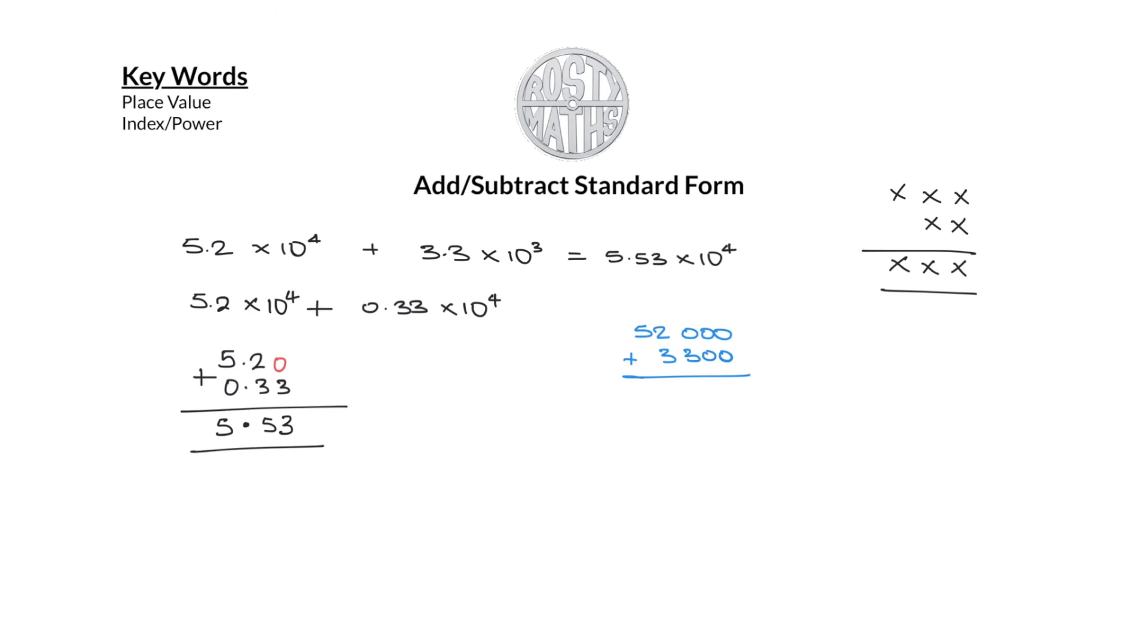Now once I'm finished adding up these two numbers, I have to change it back to standard form. So let's go. So 0 add 0, that's 0. 3 add 0, that's 3. 2 add 3, that's 5. And then we got a 5 there. So this number now is an ordinary number. I want it back in standard form. So I will move the number 1, 2, 3, 4 places. So therefore the answer again comes out as 5.53 times 10 to the power 4.